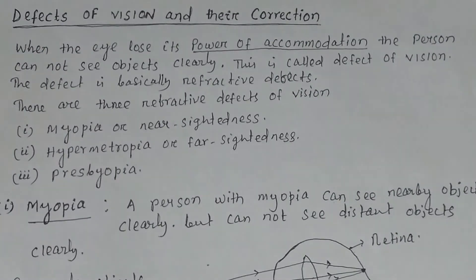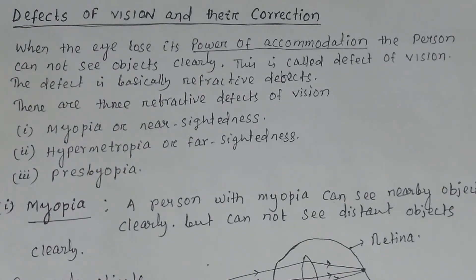In this video, we will discuss defects of vision and their correction. What is a defect of vision? When the eye loses its power of accommodation, the person cannot see objects clearly. The defect of vision is basically due to refractive defects. Because the defect is related to the eye lens, it is called refractive defects.